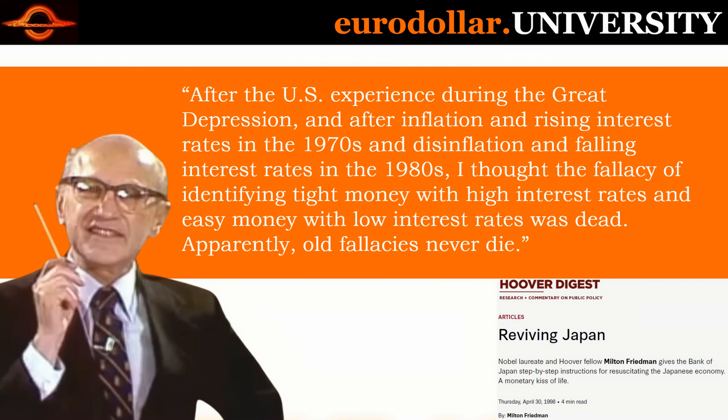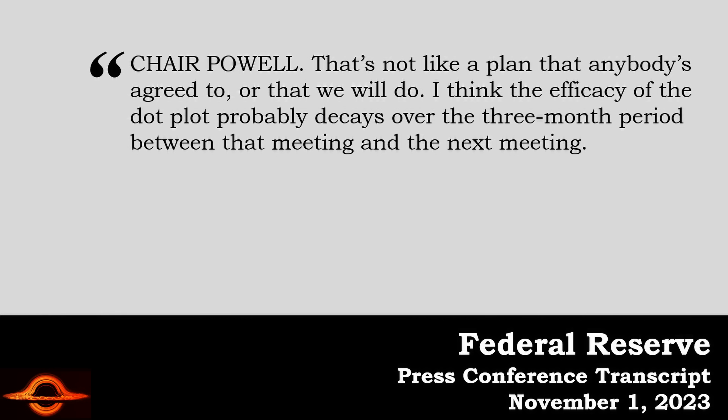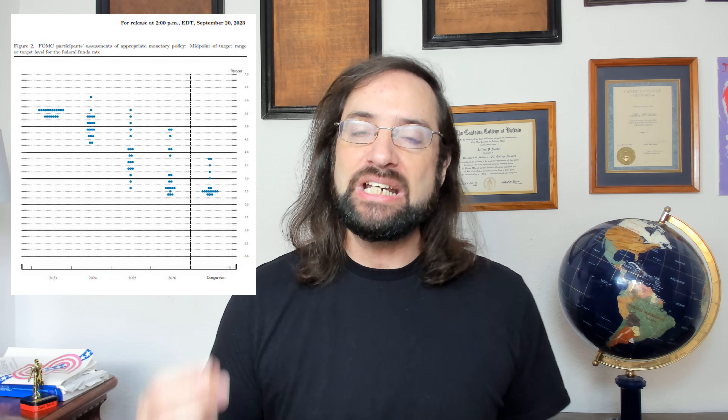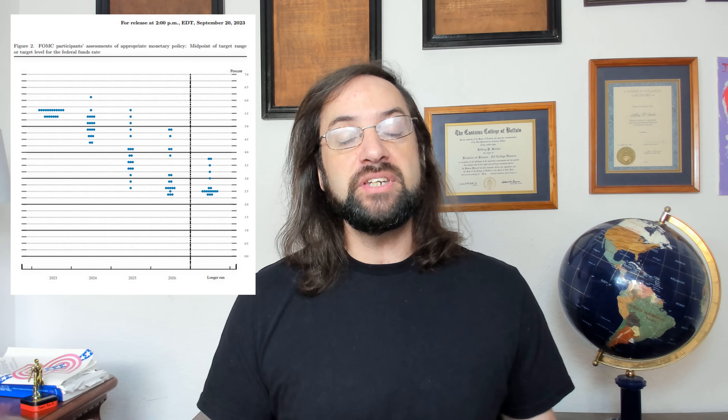There is some good news here. Part of the good news is that maybe the Federal Reserve will stop confusing people by no longer hiking interest rates. Powell did say one more thing about the dots — the Federal Reserve's infamous dots: 'That's not like a plan that anybody's agreed to or that we will do. I think the efficacy of the dot plot probably decays over the three-month period between that meeting and the next meeting.' But that's not going to stop us from interpreting yield curve signals about the macroeconomic situation and where interest rates are likely to go, now that the Fed is most likely done with its rate hikes.